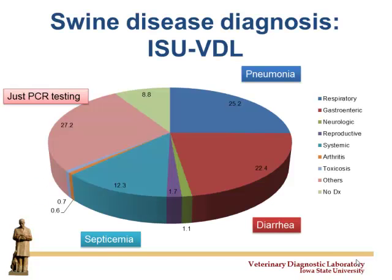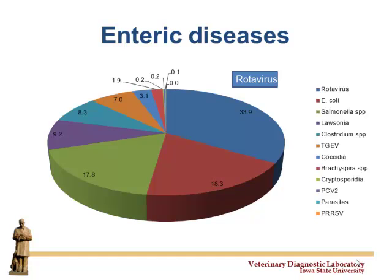At Iowa State Diagnostic Laboratory, if I break down the caseload, basically a fourth of the cases are pneumonia, a fourth are diarrhea, a fourth is everything else, and a fourth is just samples getting a PCR test — feces or oral fluids. So one of four cases that walks in the door is a diarrhea case. If I break that diarrhea case down further, the biggest pathogen found is rotavirus — in about a third of those cases we will detect rotavirus.